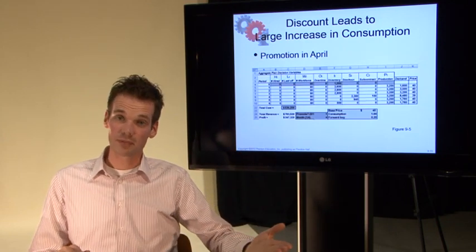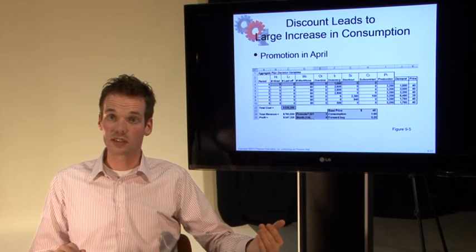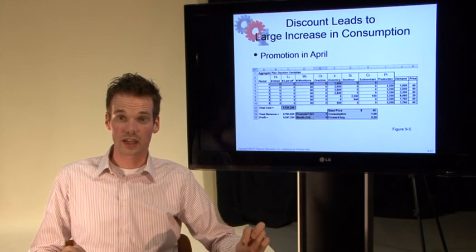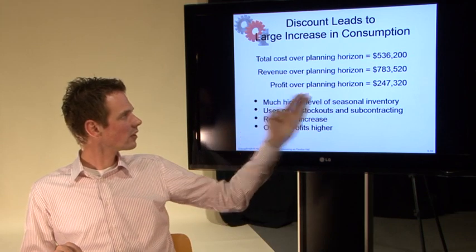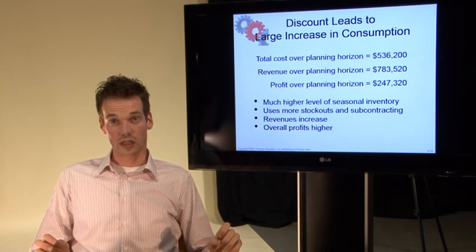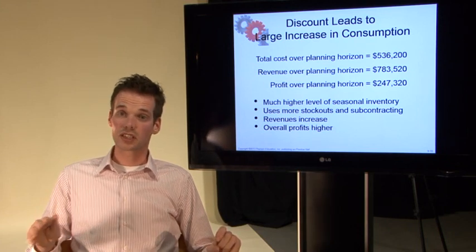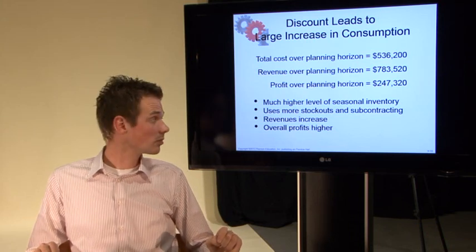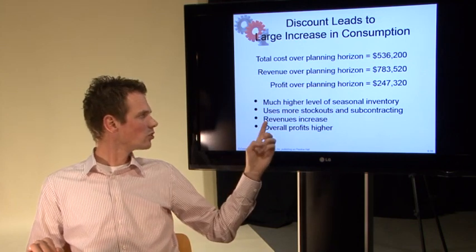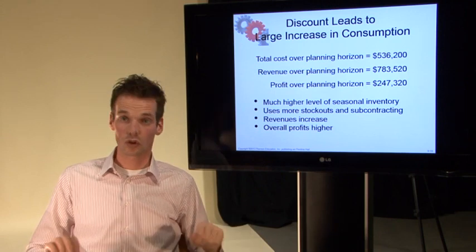If we would do the same in April, so we through the price discount, we further increased the demand. In this case the demand is 8480. Now what would happen to the profit? The profit went all the way to 247,000. So it's even higher than promoting in off-peak period. So in this case it's better to promote in peak period as compared to low period. But it carries a much higher level of seasonal inventory, uses more stockouts and subcontracting. The revenues increase and as told earlier the total profits increase.